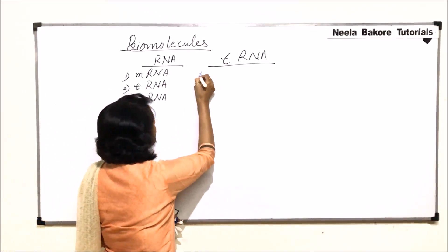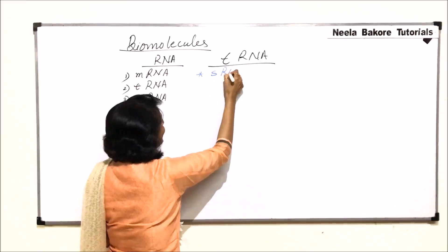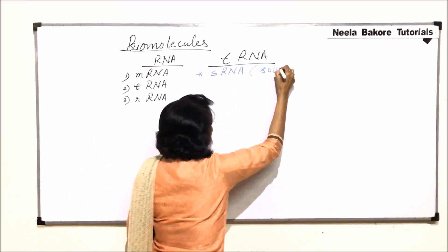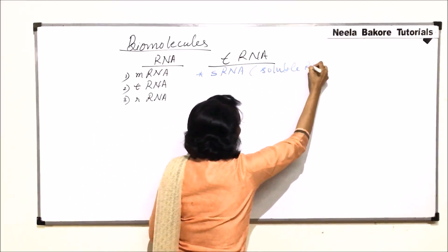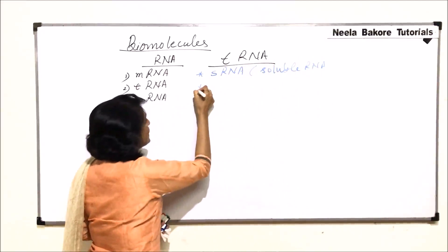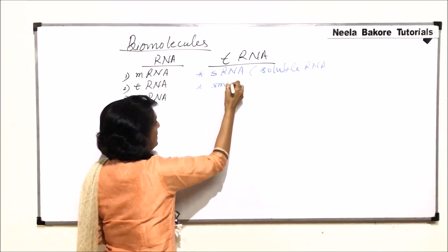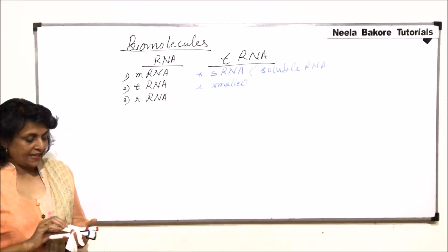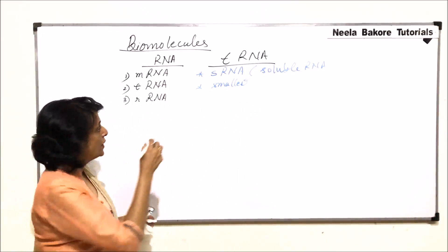These are also known as soluble RNA, so we write it as sRNA soluble RNA, and it is also the smallest of all three types of RNAs. Now let us see the structure of this first.